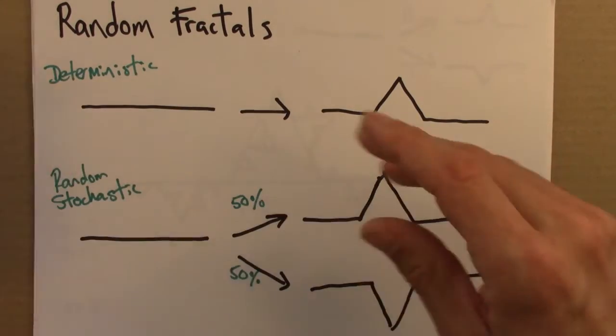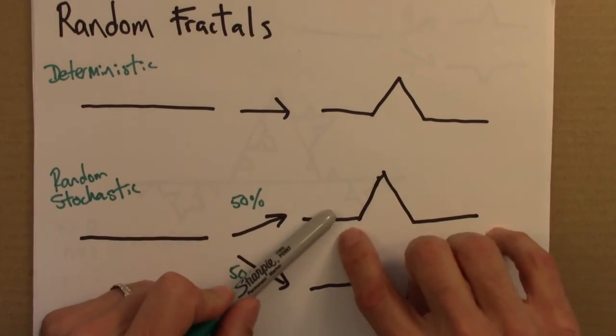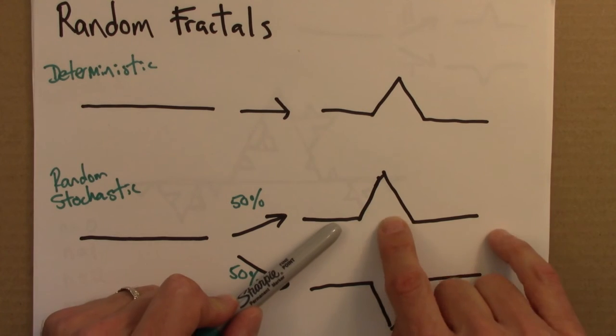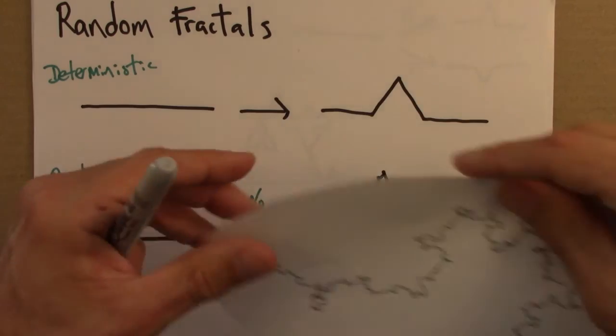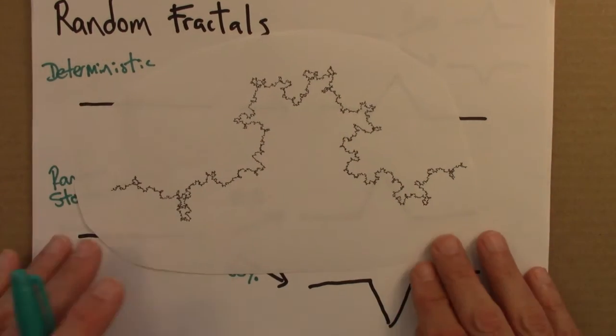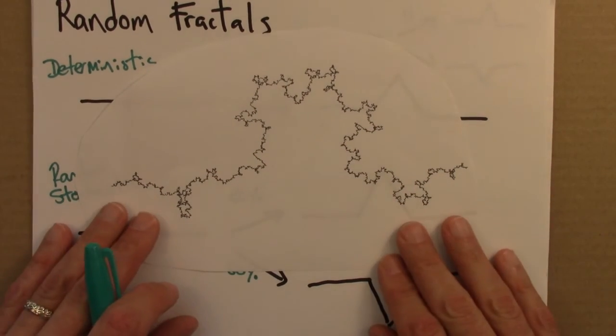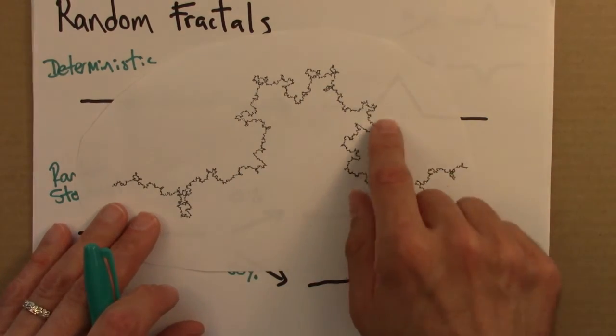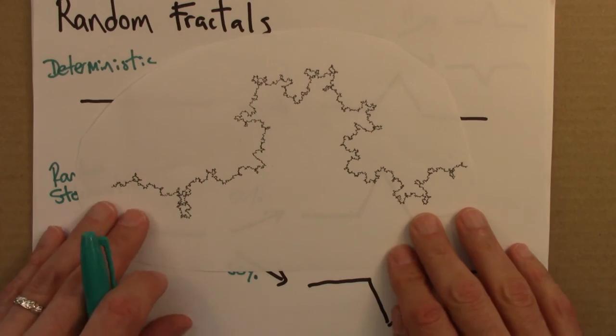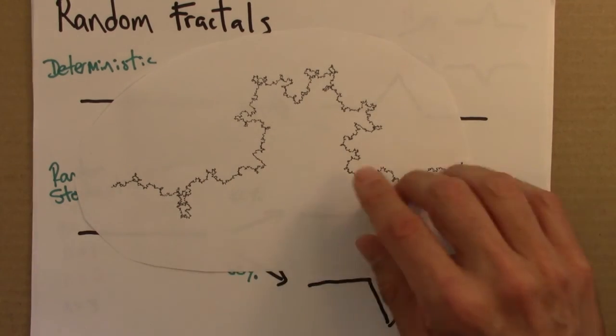Another thing one could do is change this angle. So, right now this angle is 60 degrees. We could make it so that this angle is steeper. And I did one of those, I think, with an 85 degree angle. And I get something that's not surprisingly even spikier. This maybe looks a little less realistic, at least for a coastline, because it wiggles over itself. But nevertheless, it's a pretty interesting shape.